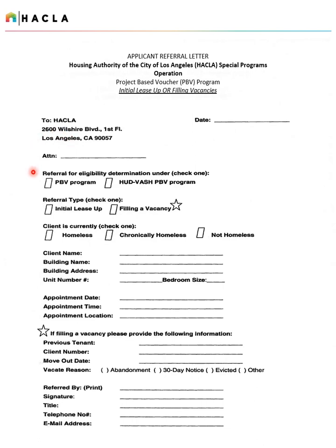Please indicate if this is an initial lease-up for a brand new building where the unit has never been occupied, or if you are filling a vacancy where a previous tenant has moved out. Please identify whether or not the client is homeless or chronically homeless, or if they are not homeless at all. You'll want to list the client's name, your property's name, the building address, the unit number, and the correct bedroom size.